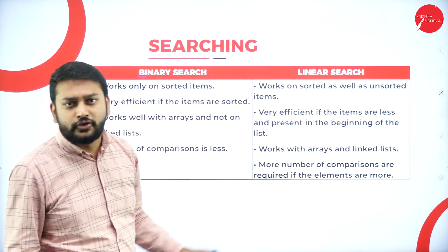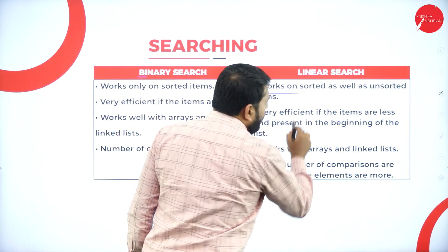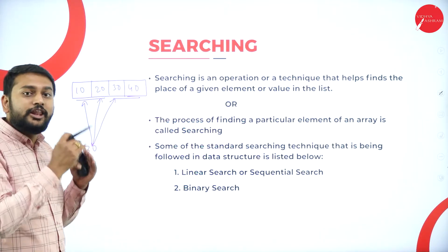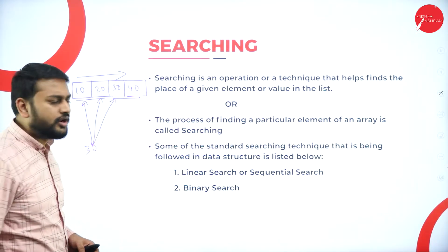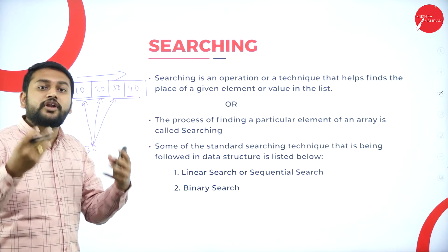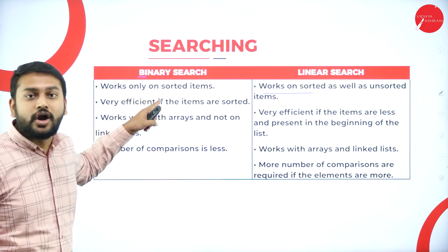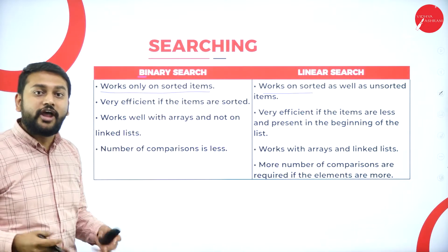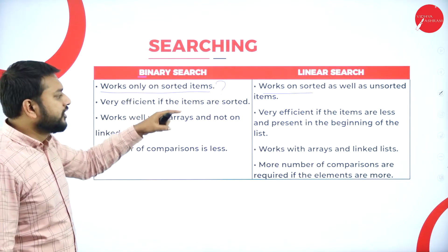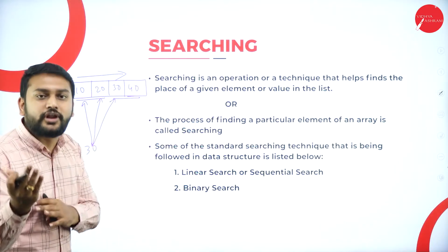Before starting the linear search explanation, let me compare binary search and linear search. Linear search works on both sorted and unsorted items — the elements don't need to be in ascending or descending order because it checks individually one by one. Binary search, however, requires items to be in sorted order. Keep that question in mind — I'll answer it in the next session on binary search.